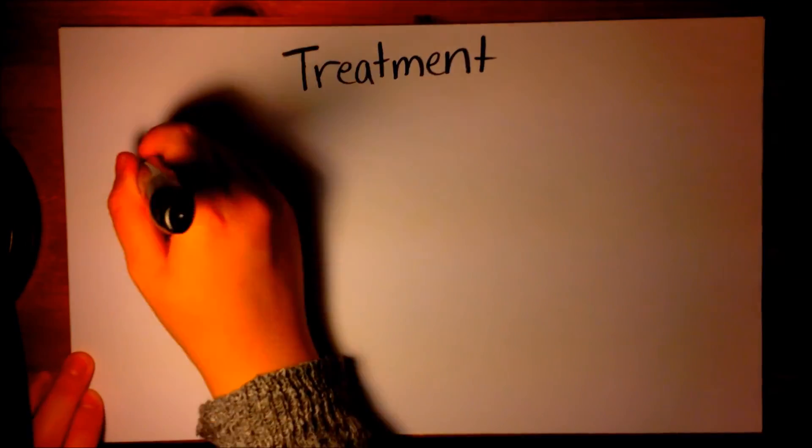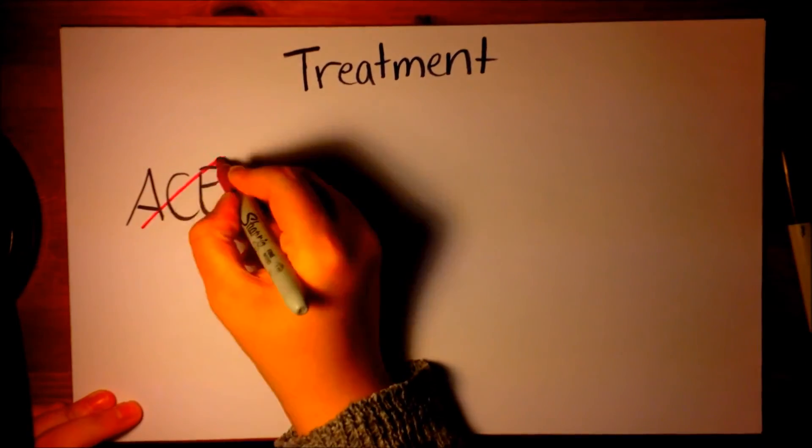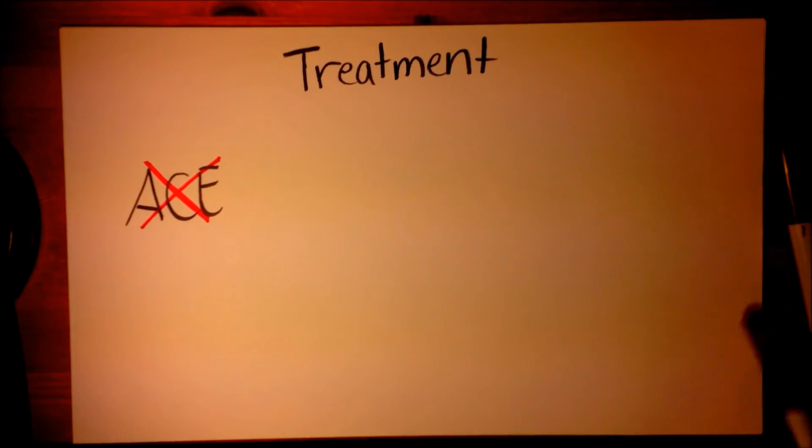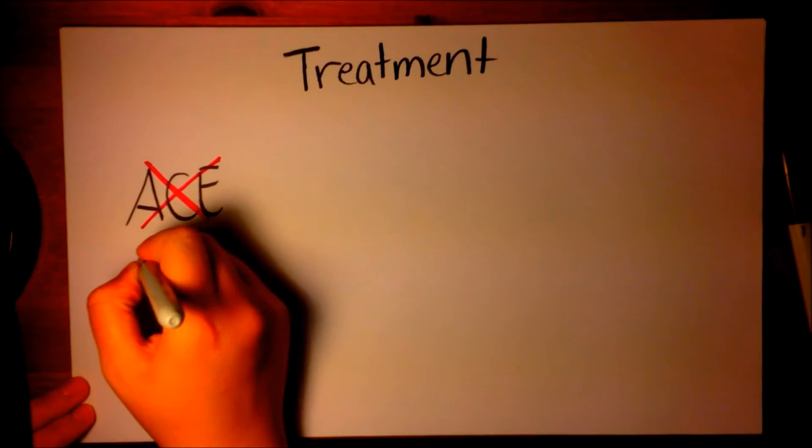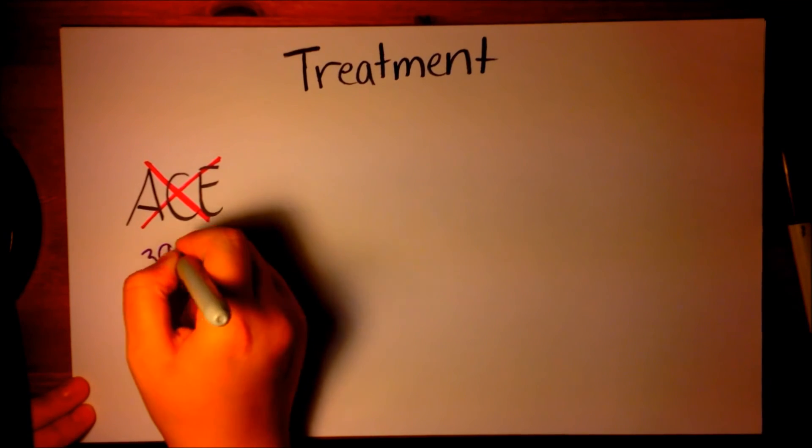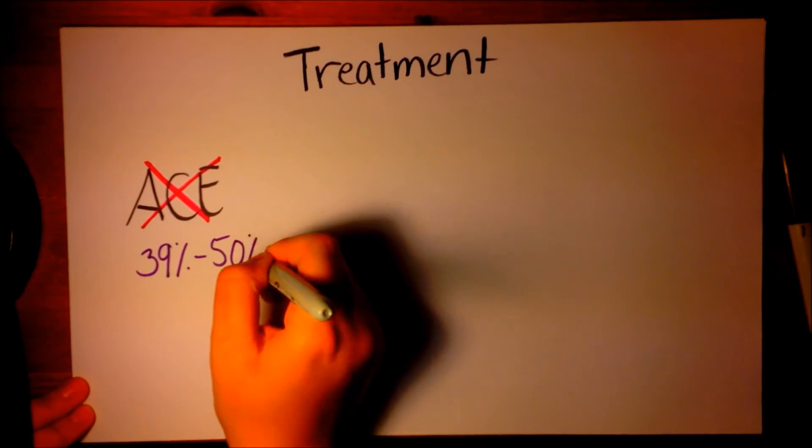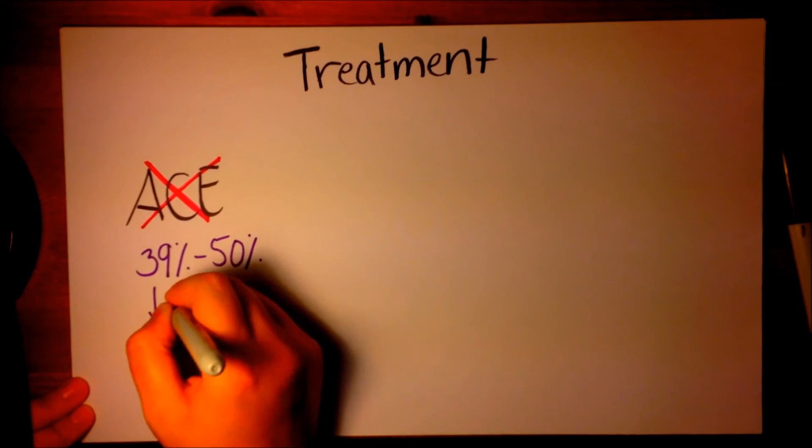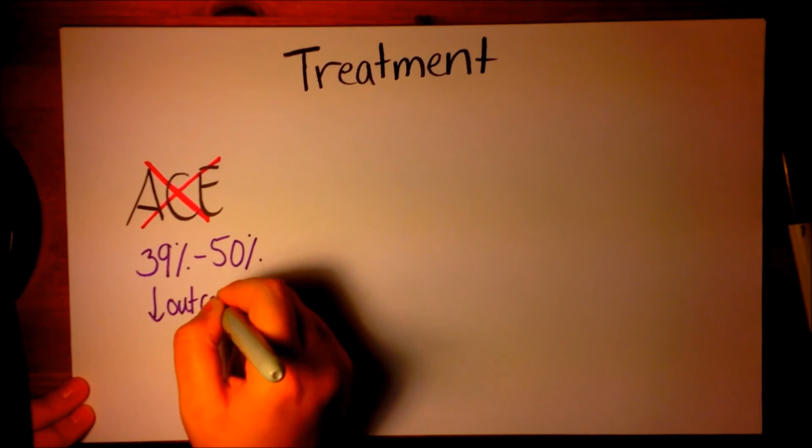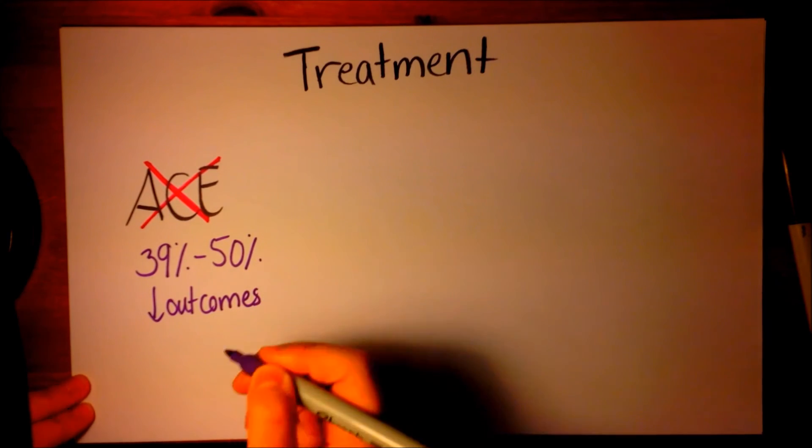With the introduction of angiotensin converting enzyme inhibitors as treatment, outcomes have improved significantly. Unfortunately, 39% to 50% of scleroderma patients who develop scleroderma renal crisis continue to have poor outcomes, including permanent dialysis.